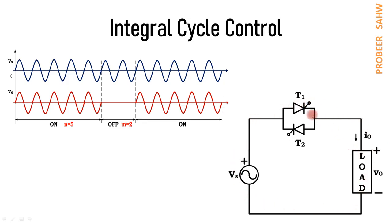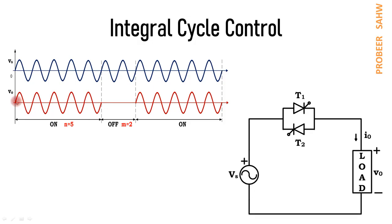A simple circuit for integral cycle control uses two thyristors T1 and T2 in anti-parallel, through which the load is connected to the source. In the positive half cycle, thyristor T1 is activated and current flows from the upper terminal of the source through T1 to the positive terminal of the load. In the negative half cycle, thyristor T2 is fired and current flows from the lower terminal of the source through T2. Thus T1 and T2 are fired alternately.